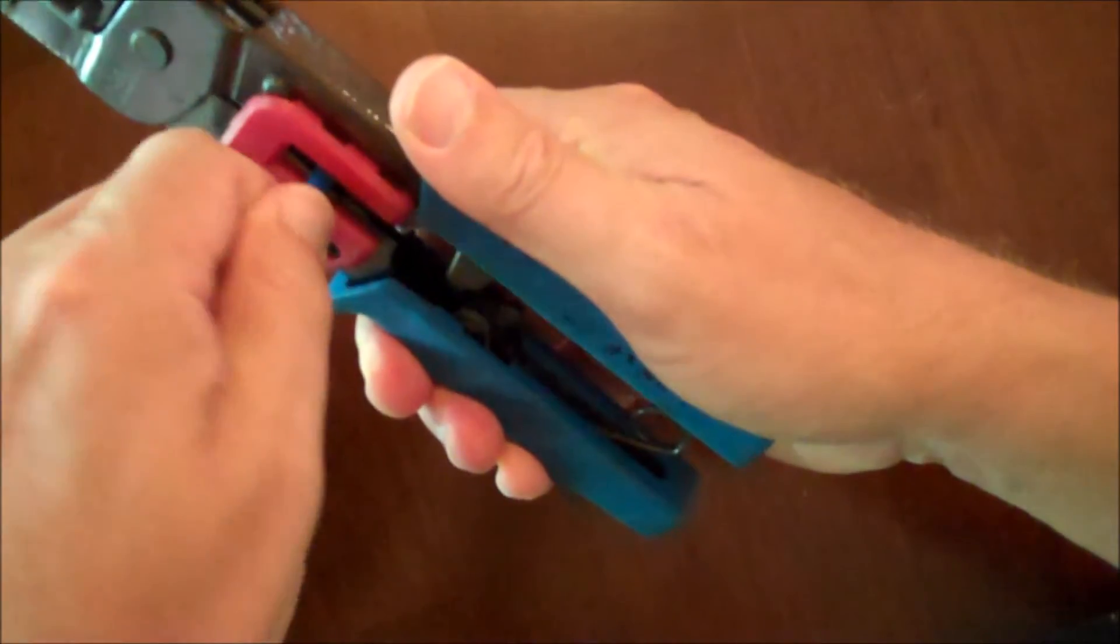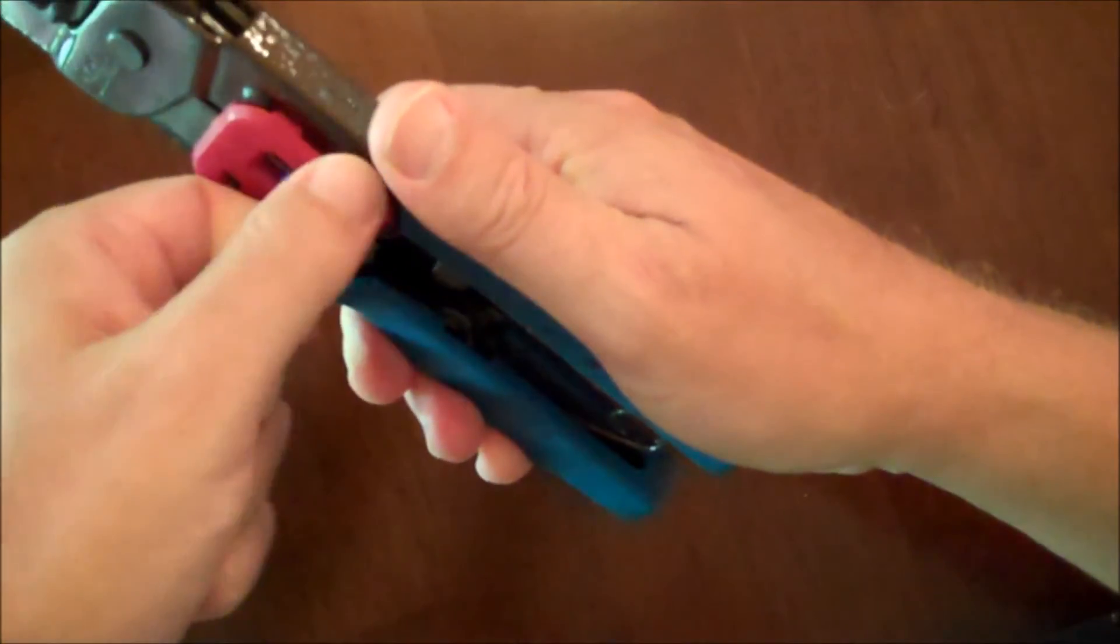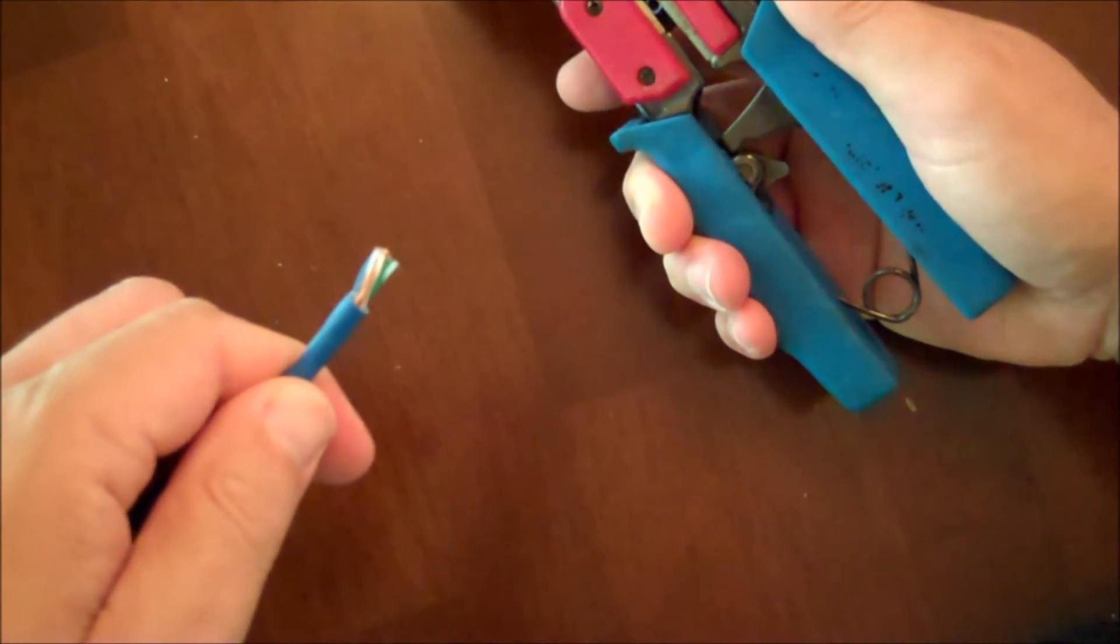Two clicks, 360 degree twist, pull. That's the proper length to strip the blue jacket.